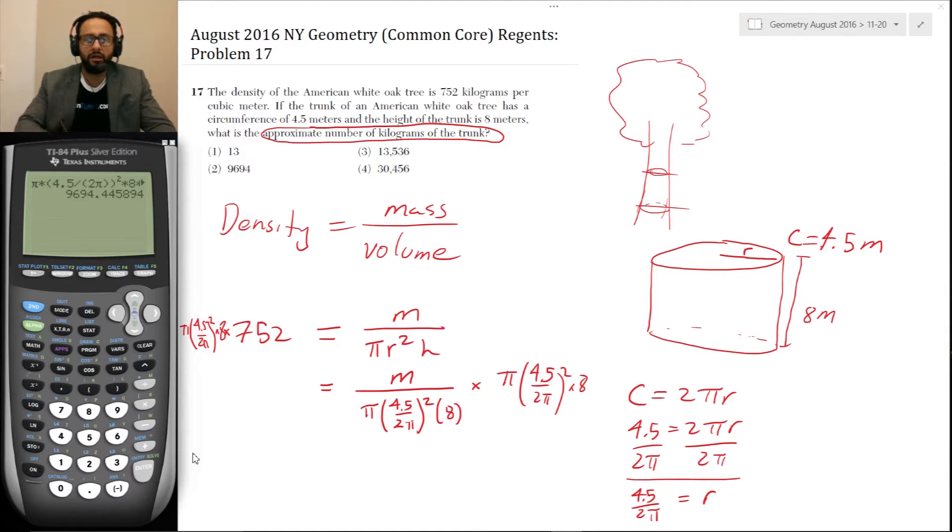Okay. And that's volume is in meters. Density is in kilograms per cubic meter. So volume is in cubic meter. So this is a number of kilograms. Okay. So nine, six, nine, four point four.